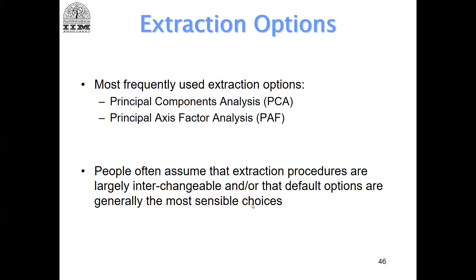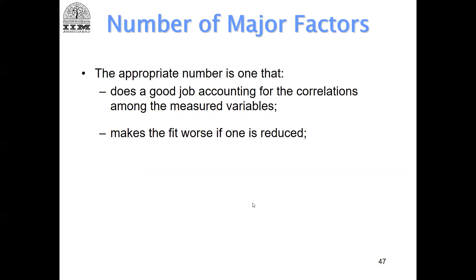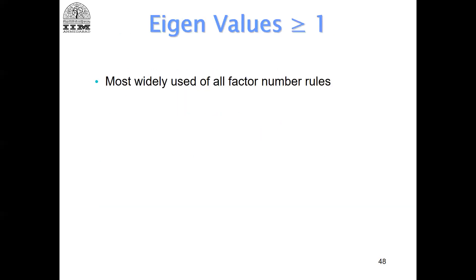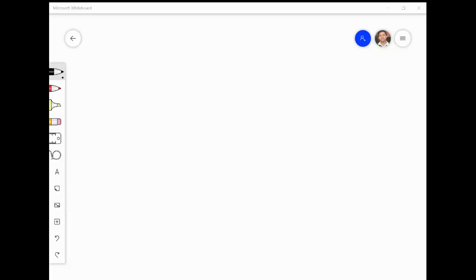The recommendation is: please understand that the default option in SPSS is principal components analysis, and the default option is wrong in this case. The right option when doing measurement testing or exploratory factor analysis is principal axis factoring. The most common criterion behind the number of factors to extract is what we call eigenvalues.